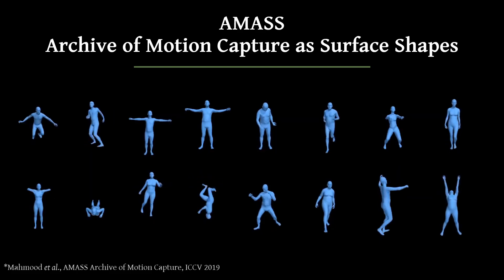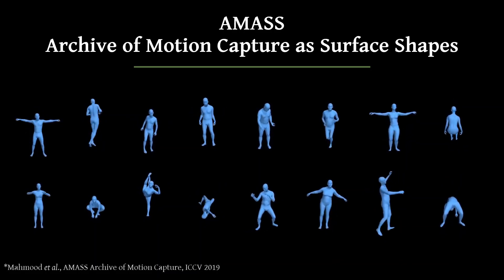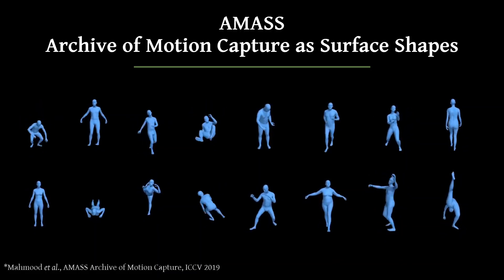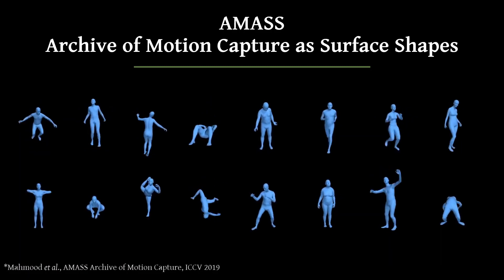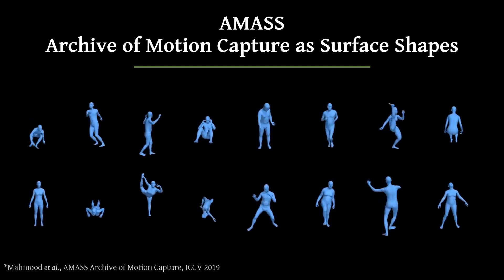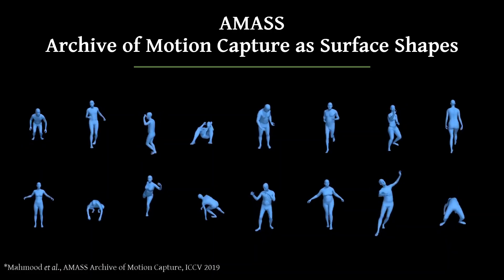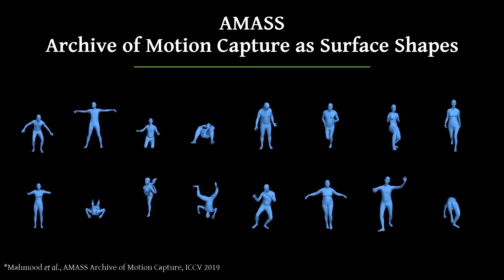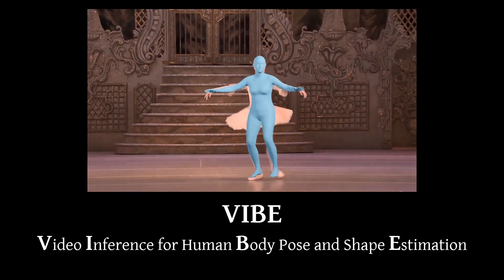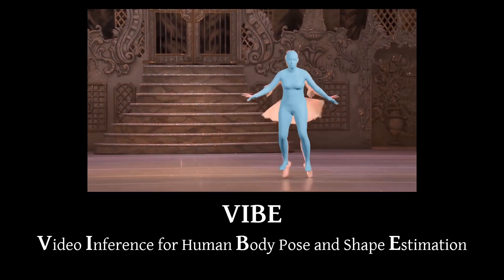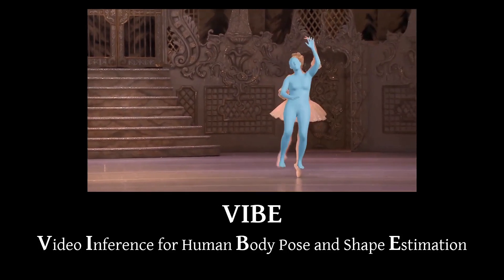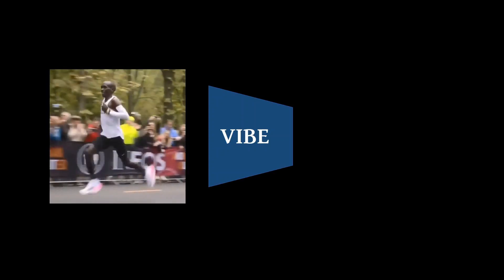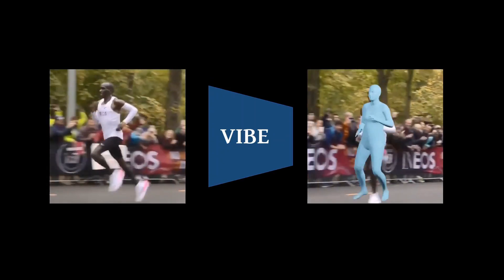We solve this problem by exploiting a large dataset of unpaired 3D human motions. The key idea is to train the neural network to produce 3D sequences that are indistinguishable from real human motions. To achieve this, we adopt an adversarial training approach. We call the resulting method VIBE, which stands for Video Inference for Human Body Pose and Shape Estimation. VIBE produces 3D body shapes and poses that are realistic and kinematically plausible.